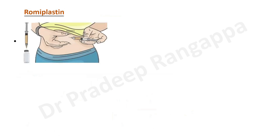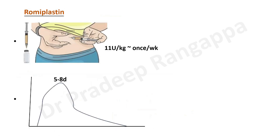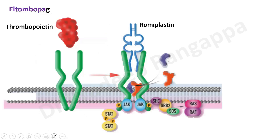Romiplostim can be given as a subcutaneous injection. The dosage is 1 mcg per kg given once a week, and the peak action is at 5 to 8 days after administration. The action fades away by around 28 days, so the effect lasts for approximately four weeks.